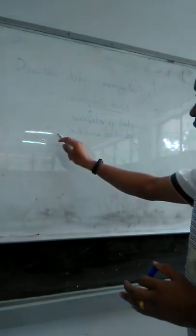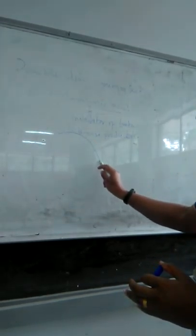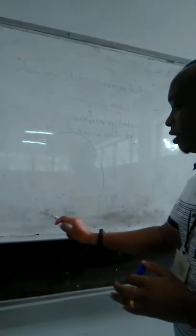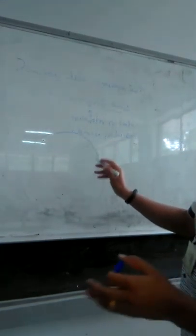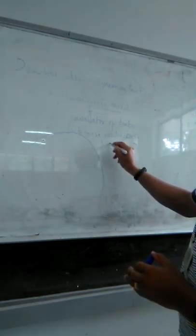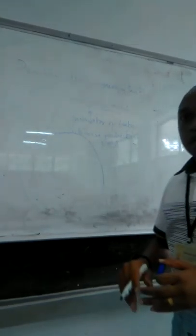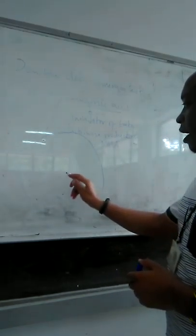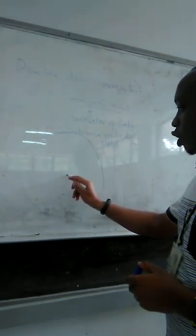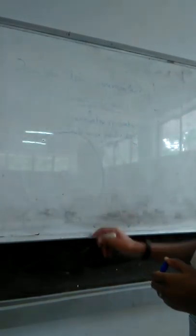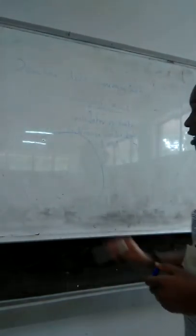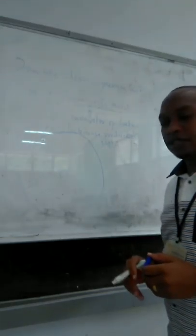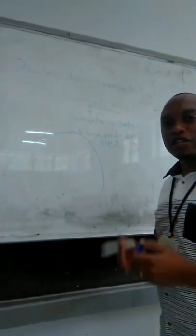Antibiotic susceptibility testing is performed on the culture media known as Mueller-Hinton Agar, abbreviated as MHA. After standard inoculation of the media, a disc containing clavulanic acid is placed on the surface of the inoculated Mueller-Hinton Agar.